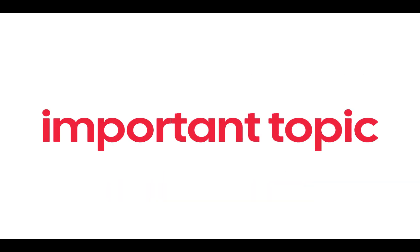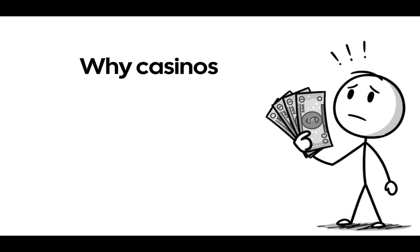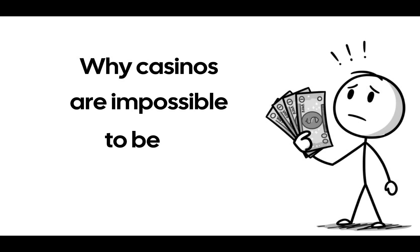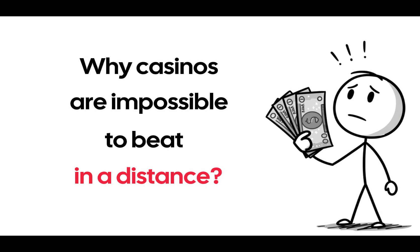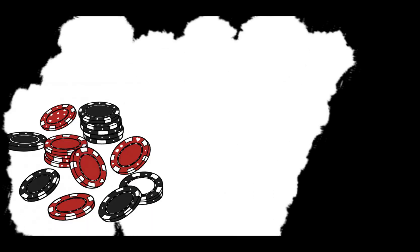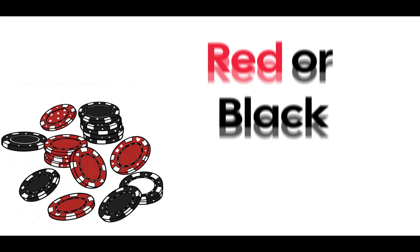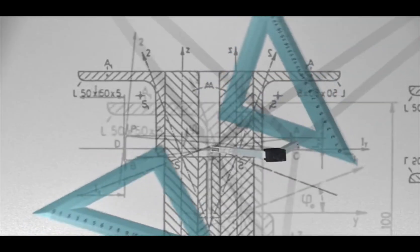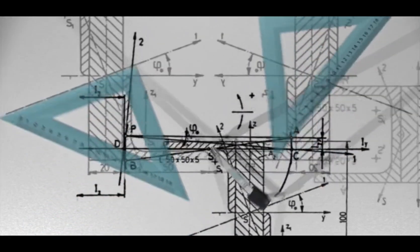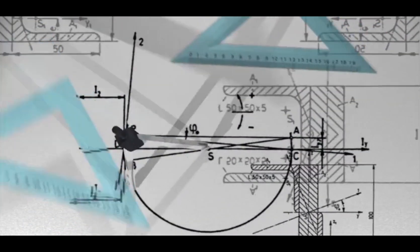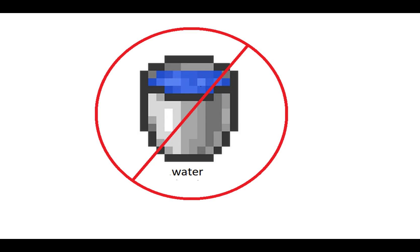Today we're going to tackle an insanely important topic: why casinos are impossible to beat in the long run. It would seem that the odds are 50-50 — red or black — but math turns out to be trickier. Today we'll be without fluff. Only facts, logic, and real math. Let's go.